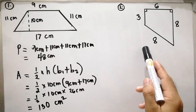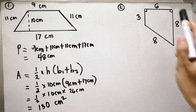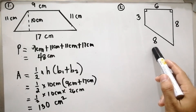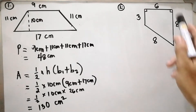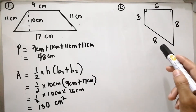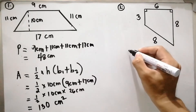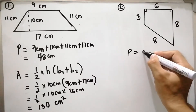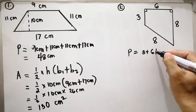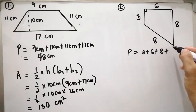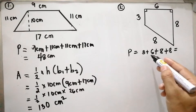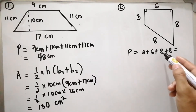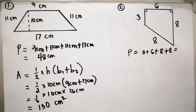For item number 2, the measures of the sides are 3 units, 6 units, 8 units, and 8 units. For the perimeter, we add up all the sides of the trapezoid. P equals 3 units plus 6 units plus 8 units plus 8 units. So 3 plus 6 is 9, plus 8 is 17, plus 8 equals 25 units.